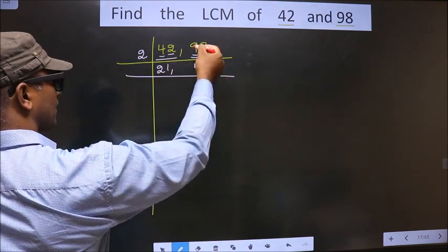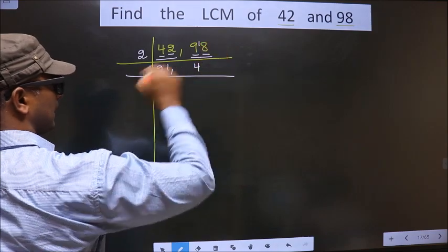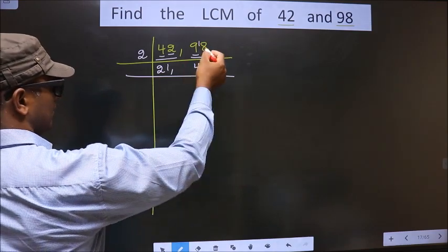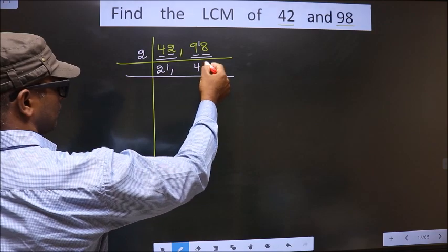9 minus 8 is 1, 1 carried forward making it 18. When do we get 18 in 2 table? 2 times 9 is 18.